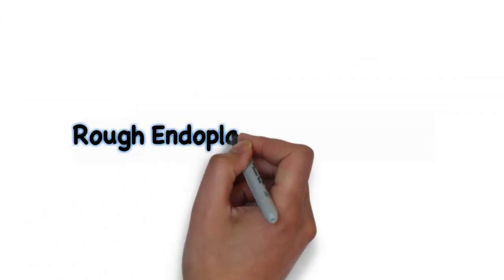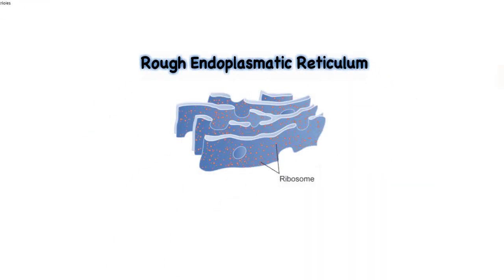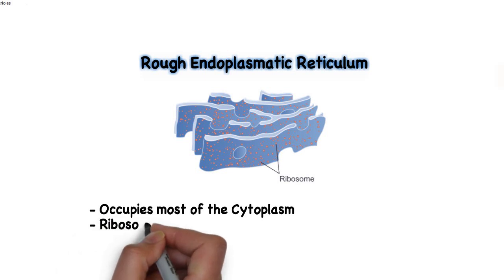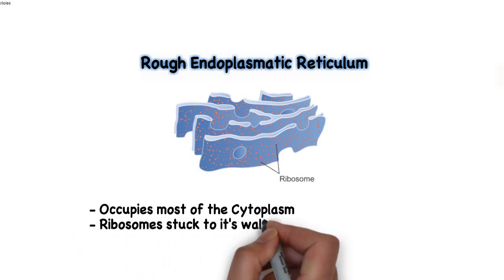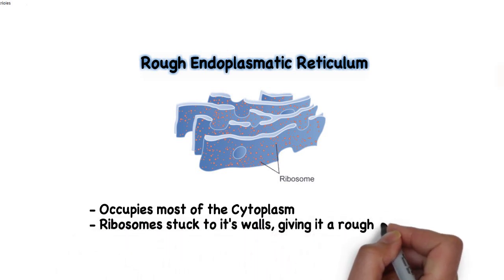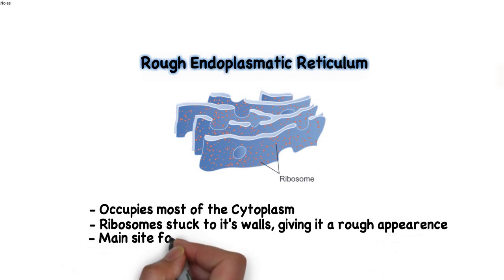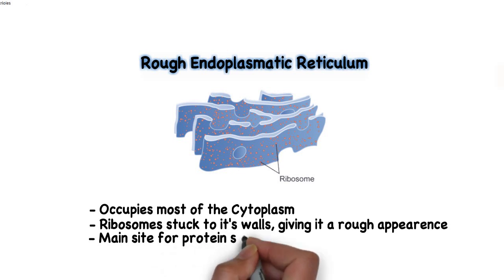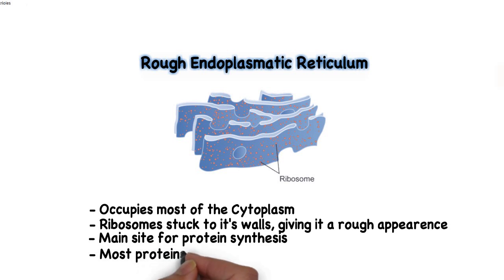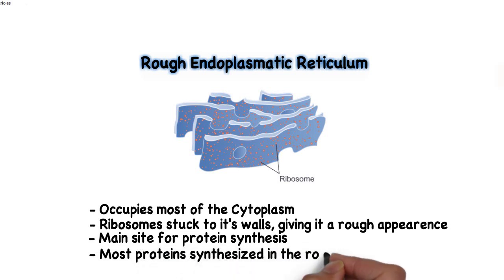The rough endoplasmic reticulum is a membranous organelle that occupies most of the cytoplasm. Also called the rough ER, it has this name because of ribosomes which are stuck to its walls. These ribosomes make this organelle the main site of protein synthesis. Most of the proteins synthesized by the rough ER are transported to the Golgi body and excreted from the cell.